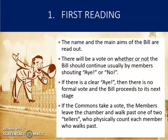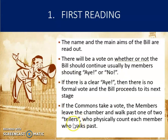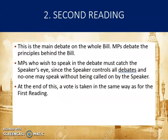First reading is the first stage of a bill becoming an act. It is a formal introduction of the bill to the House of Commons or House of Lords. The name and the main aims of the bill are read out, and there will be a vote on whether the bill should continue, with MPs shouting either 'aye' for yes or 'no.' If there's a clear 'aye,' there's no formal vote and the bill proceeds. If a vote is needed, MPs leave the chamber and walk past one of two tellers who physically count each member. The bill is not debated at this stage, but a date is set for its second reading, a bill number is allocated, and an order is made for the bill to be printed.